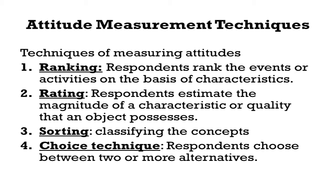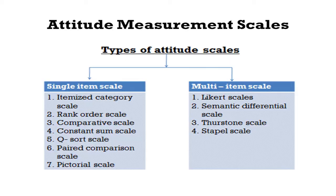The different types of attitude scales can be basically single-item scales or multi-item scales. Single-item scales include itemized category scales, rank order comparative scales, constant sum, Q-sort scales, paired comparison, and pictorial scales. In multi-item scales you have Likert scales, semantic differential scales, Thurstone scales, and Staple scales.